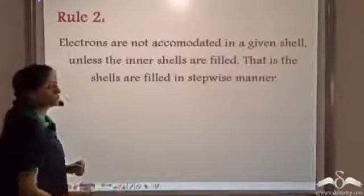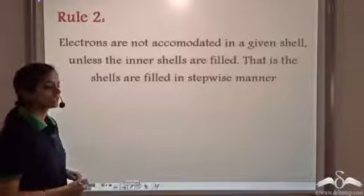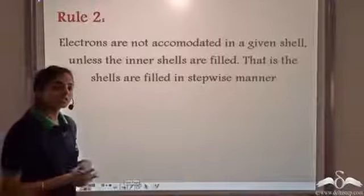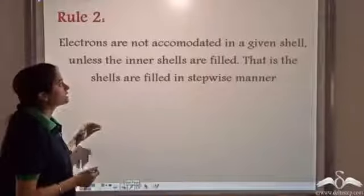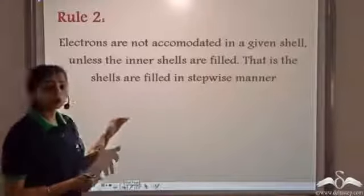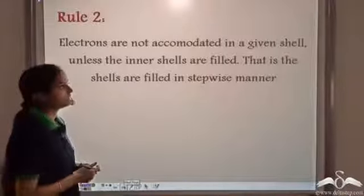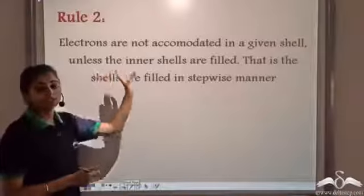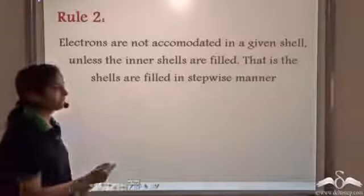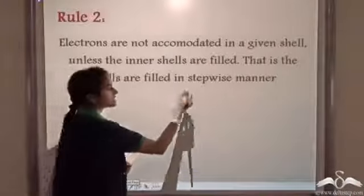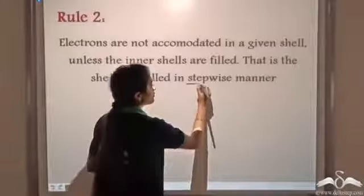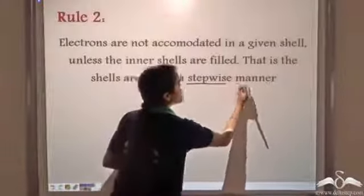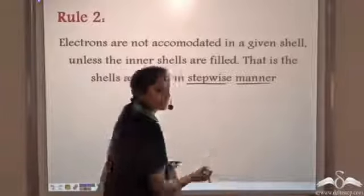The second rule says that electrons are not accommodated in a given shell unless the inner shells are filled — that is, the electrons are filled in a stepwise manner.